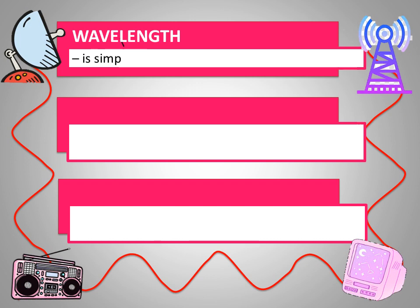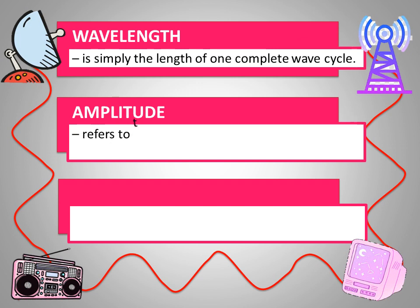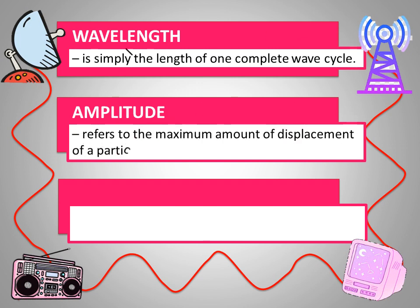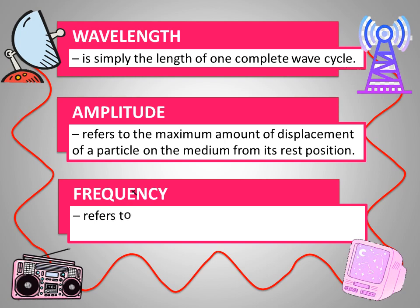Wavelength: is simply the length of one complete wave cycle. Amplitude: refers to the maximum amount of displacement of a particle on the medium from its rest position. Frequency: refers to the number of cycles occurring per second.